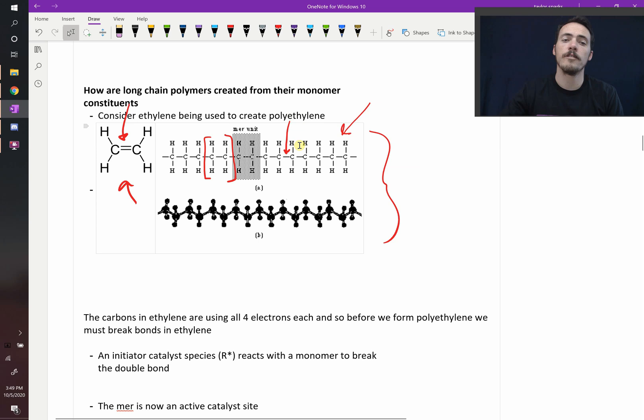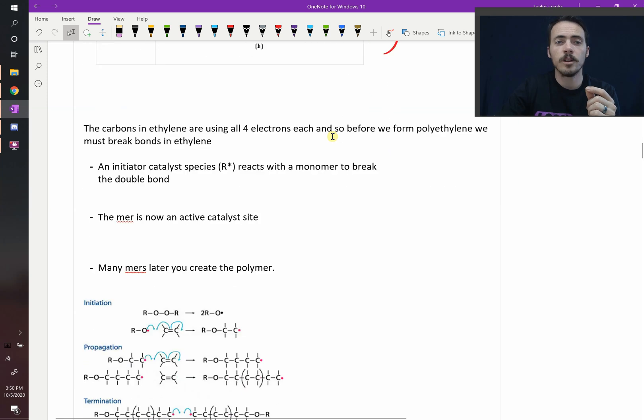Remember, at all times, carbon wants to have four bonds, because it's got its four electrons. So they take advantage of that to do polymerization. Here's how it works.